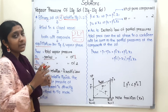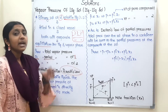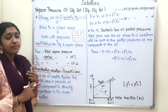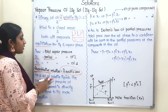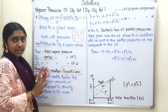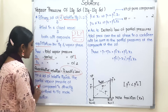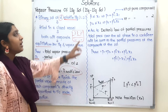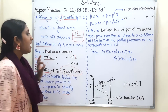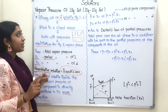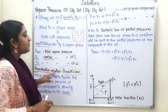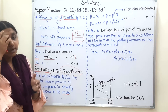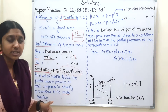Now, this concept — we have to understand Raoult's Law. Raoult, as a scientist, gave a quantitative relationship for partial vapor pressure using mole fraction. What does Raoult's Law say? For a solution of volatile liquids, the partial vapor pressure of each component is directly proportional to its mole fraction. So P1 is directly proportional to X1, and P2 is directly proportional to X2.